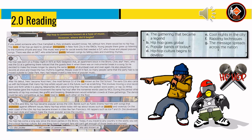Hip-hop was born on a Friday night in 1973 at 1520 Sedgwick Avenue, an apartment block in the Bronx. Clive, aka Herc, who was a DJ at a gathering there, noticed that guests liked the instrumental breaks in songs. He made the breaks longer by playing the same drum beat section over and over again, and played two records at once, mixing the rhythms together. People loved it and the party had to be moved outside to Cedar Park. Herc had helped invent a new kind of popular music.